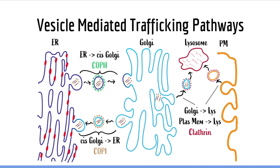Here we can see a diagram of the main vesicular coat proteins and their associated pathways. COP2-coated vesicles transport proteins from the ER to the cis Golgi. This is known as anterograde transport because proteins are moved from the center of the cell towards the plasma membrane. You may be wondering what the cis Golgi is. The Golgi apparatus has two sides: the side that faces the endoplasmic reticulum and the side that faces the plasma membrane. The side that faces the endoplasmic reticulum is known as the cis Golgi.